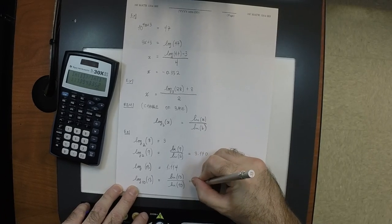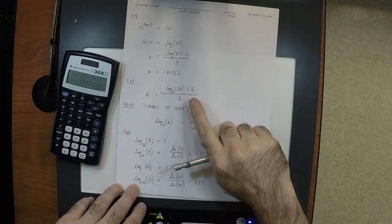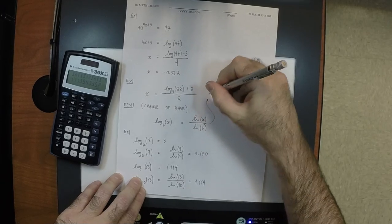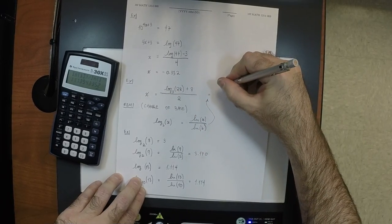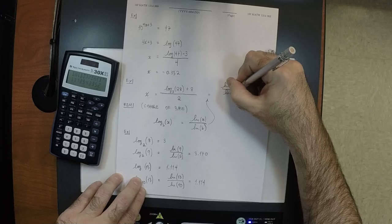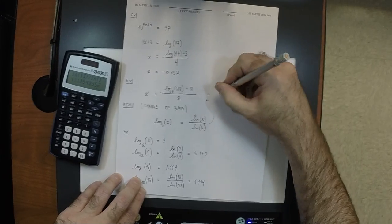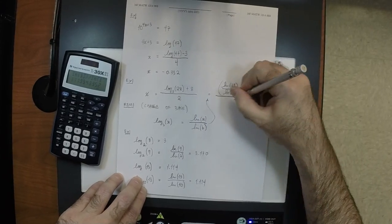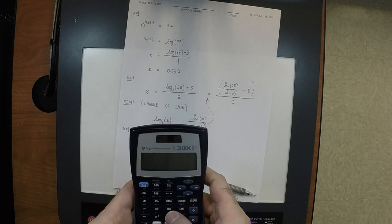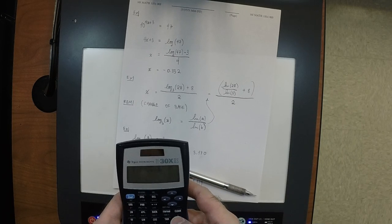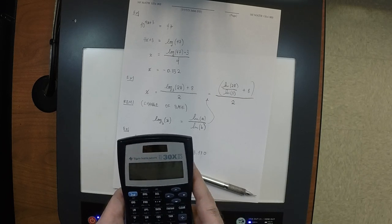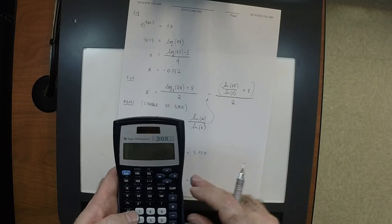Now we can answer the original question. Taking x equals (log base 3 of 28 plus 8) divided by 2 and using the change of base formula: x equals (ln(28) divided by ln(3), plus 8) all divided by 2. The machine says approximately 5.517.